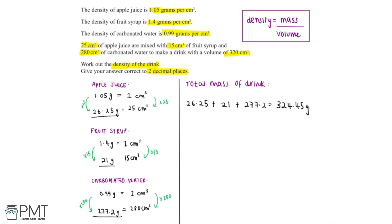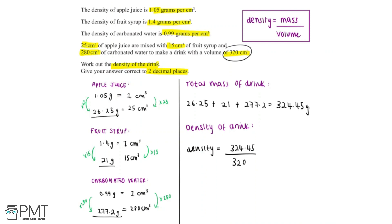The question asks us to work out the density of the drink, and we're told that the total volume of the drink is 320 centimetre cubed. Now that we've found the mass and we're given the volume, we can use these to find the density. Density equals mass divided by volume, so we calculate 324.45 divided by 320, which equals 1.013906… and rounded to two decimal places is 1.01 grams per centimetre cubed.